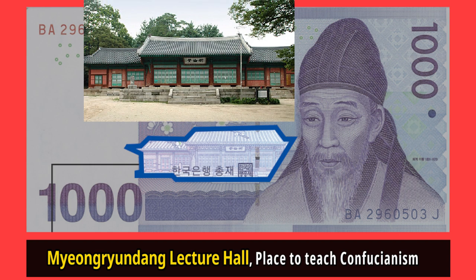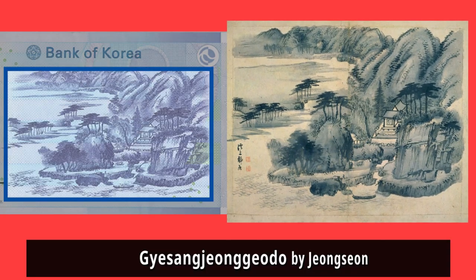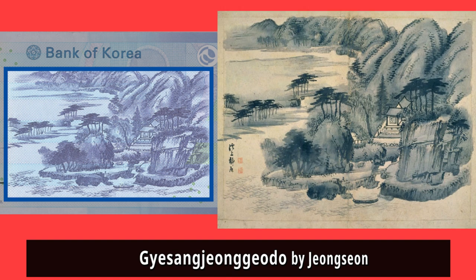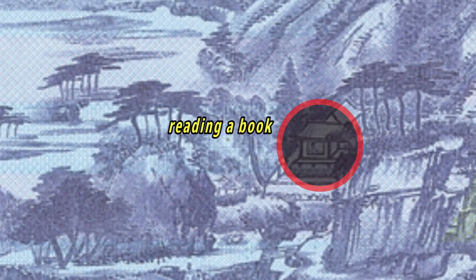Myungyundang is located in Sungkyunkwan University. On the back you can see a painting by someone called Jungsun. This is called the Gaesang Jeonggodo, which means 'staying quiet in the stream.' If you look closely at this picture, you can see there is a person in this house, apparently known to be Yi Hwang, peacefully reading a book.